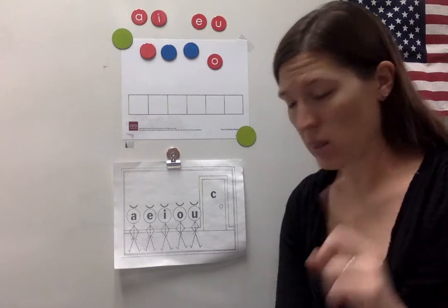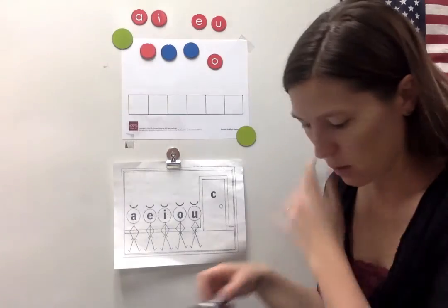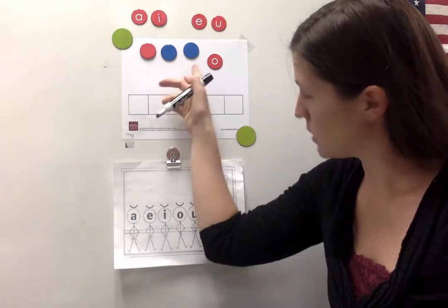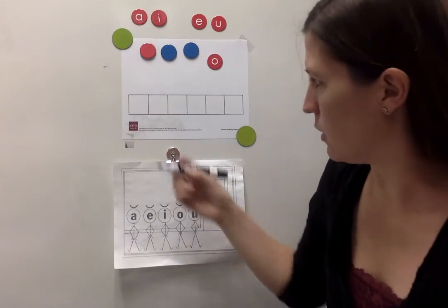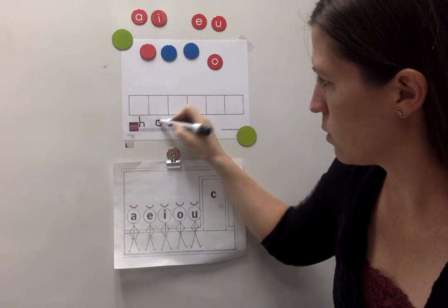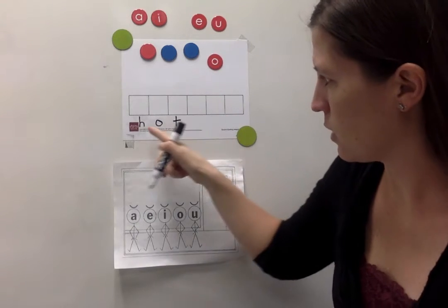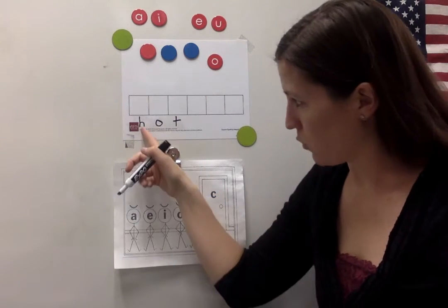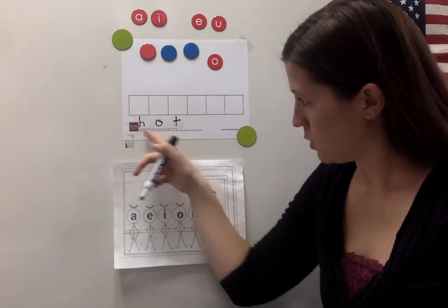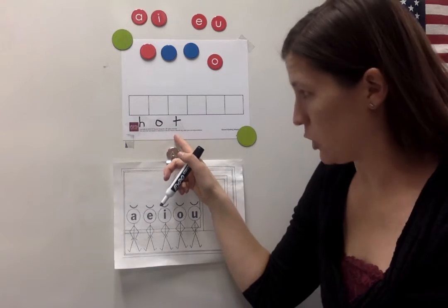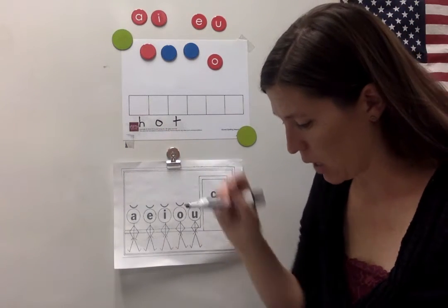This time I'll write the word and then we'll figure out which sound chips we need. My word is spelled H-O-T. H-O-T. The letter H is in the first spot. The letter O is in the middle and the letter T is in the last. Now I'm going to move the chips.